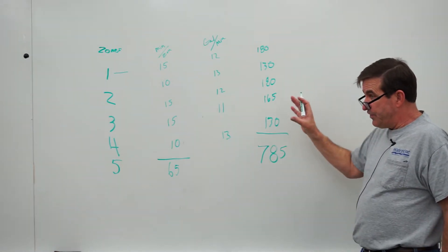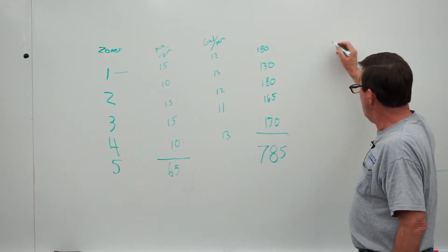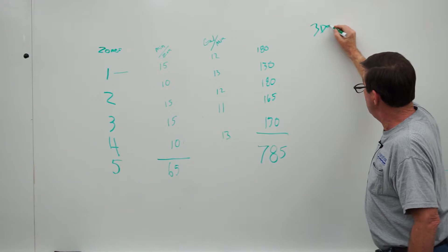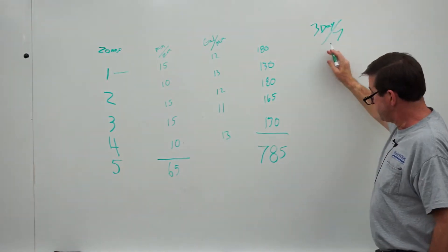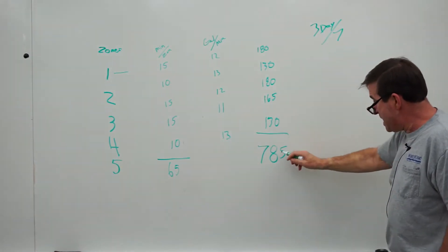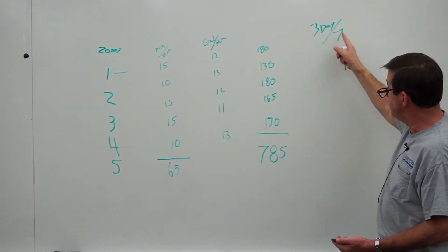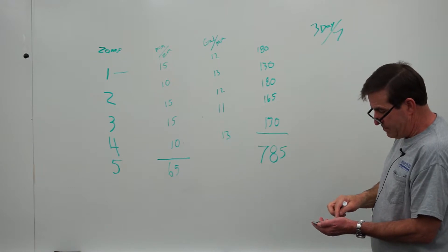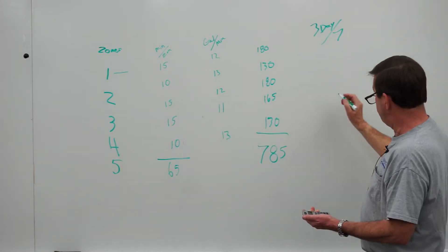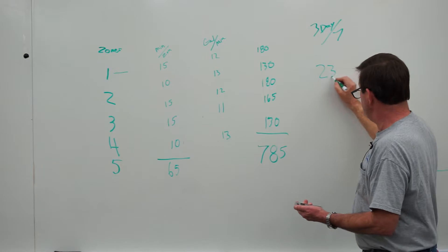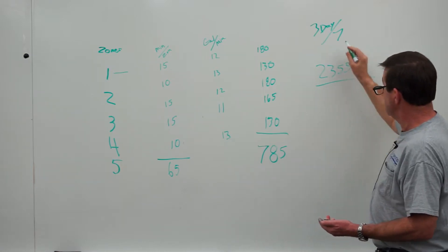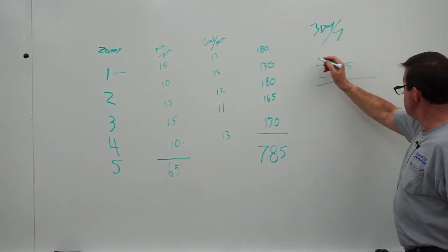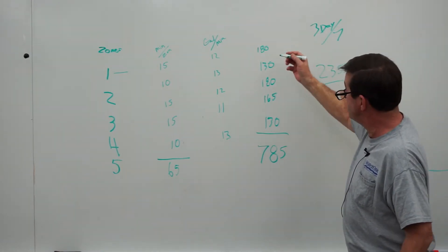Right now this sprinkler system is set to water three days a week, out of seven. So each week, they're going to use 785 gallons, three times. So I multiply that number times three. That's 2,355 gallons of water. The sprinkler is set to go at 6 a.m.